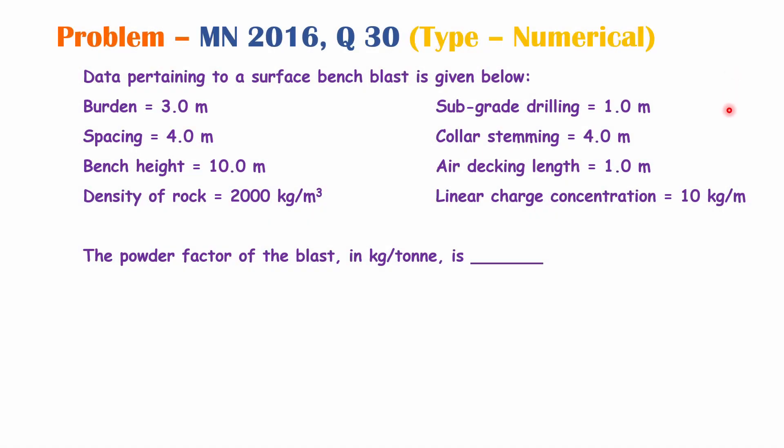Let's solve one more question from GATE 2016, question number 30. Data pertaining to a surface bench blast: burden = 3 m, spacing = 4 m, bench height = 10 m, density of rock = 2000 kg/m³, sub-drilling = 1 m, stemming = 4 m, air decking length = 1 m, linear charge concentration = 10 kg/m. Find the power factor of the blast in kg/ton.